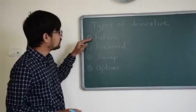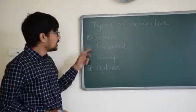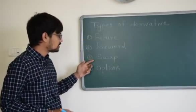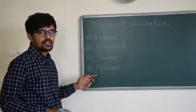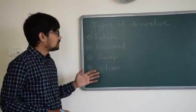So there are four types of derivative instruments: Future, Forward, Swap, and Options. These are different types of derivative instruments.